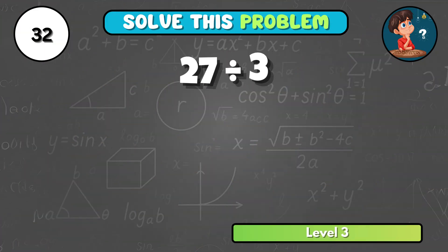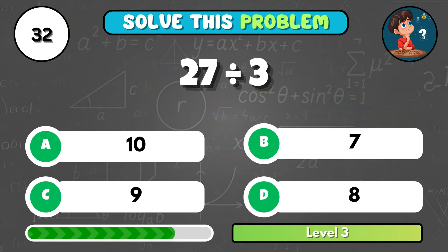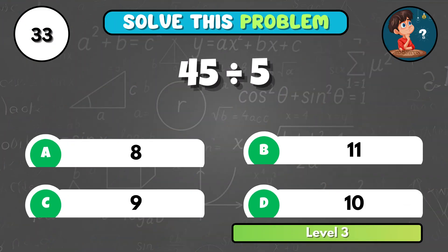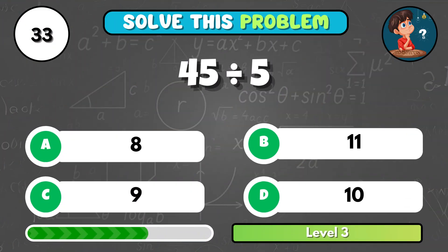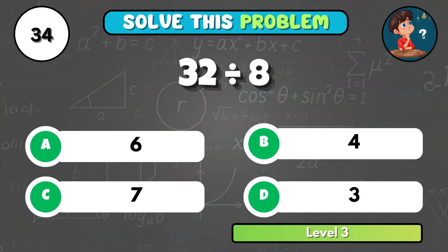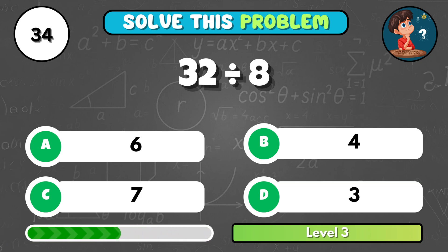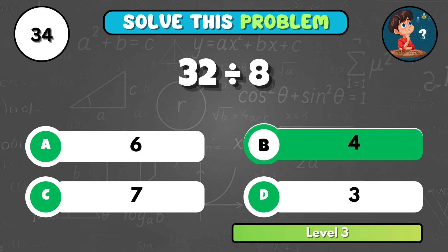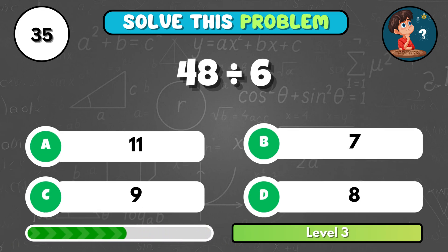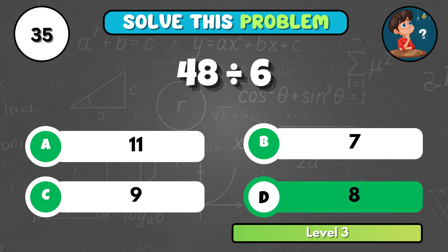Try this challenge — twenty-seven divided by three equals what? It's C, nine. What's the result when forty-five is divided by five? That comes to C, nine. Moving on: thirty-two divided by eight equals... That's B, four. Solve this: forty-eight divided by six is how much? It equals D, eight.